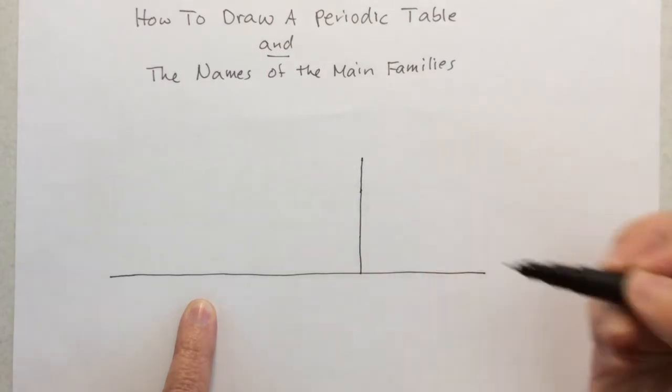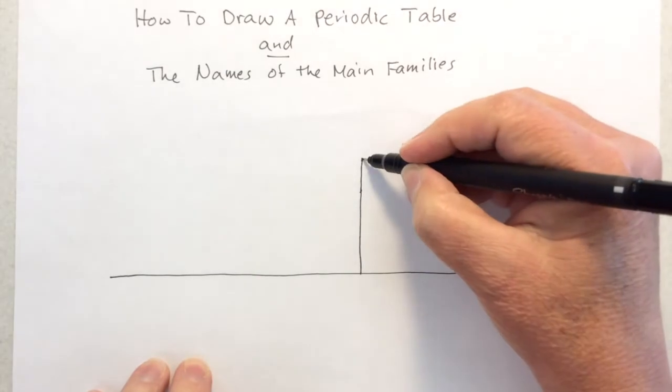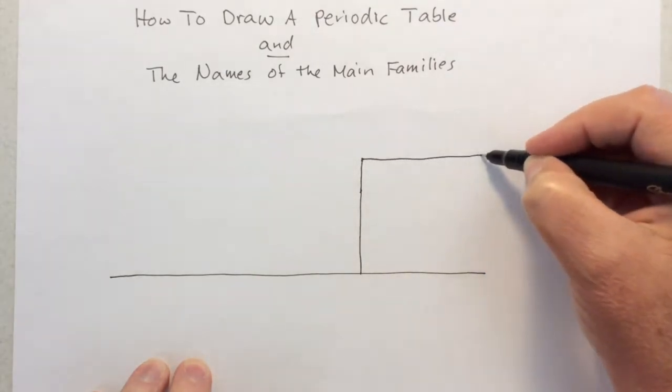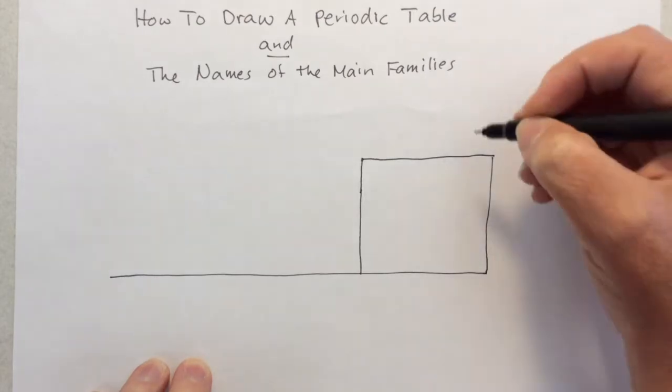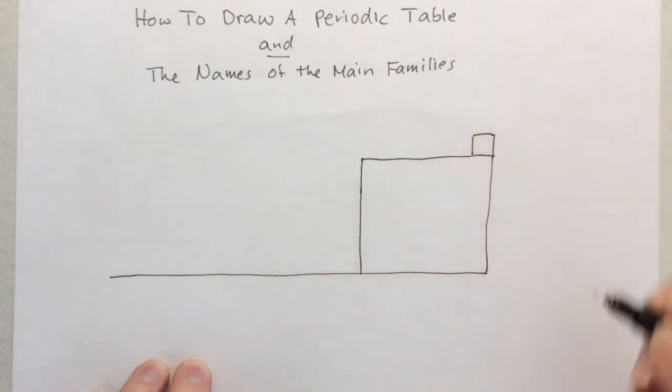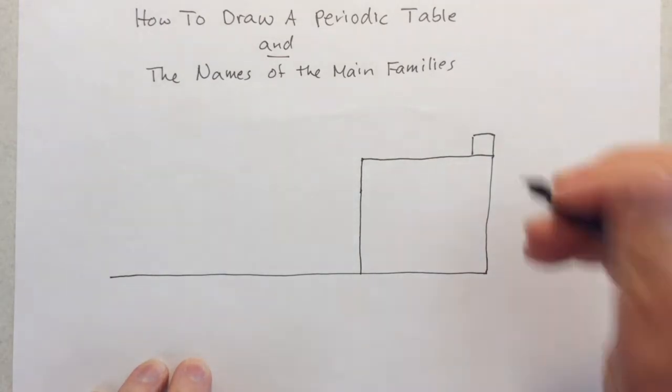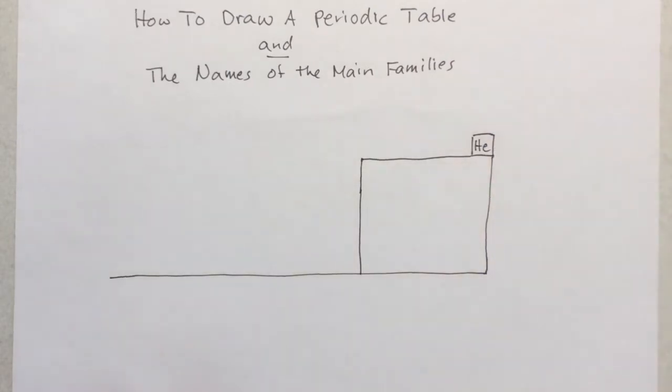This line and that line are the same length more or less. Make that a box, complete that as a box. Then in the corner, the very top of that, put a little box that's just sitting there and that is helium. We've started our periodic table.